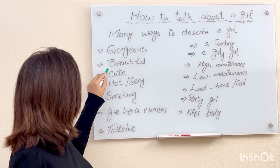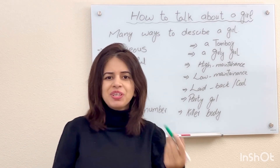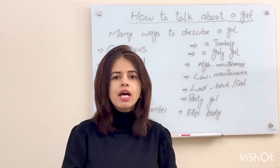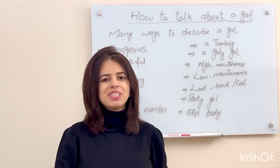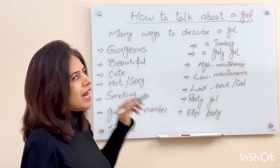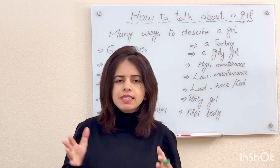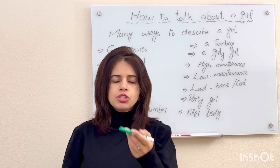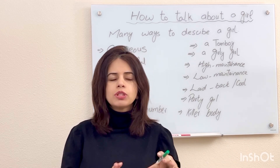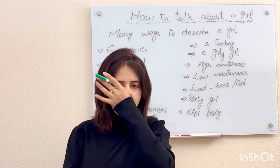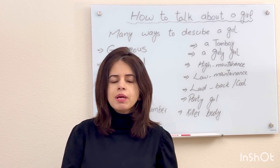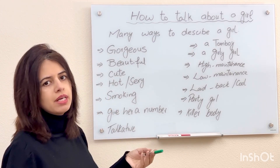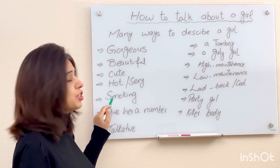You can say she is beautiful. The next word is cute — some girls have a very innocent look and they are very cute, so you say 'she is such a cute girl.' If a girl is a little sexy type, she is hot, then you can use 'hot' and 'sexy.' These terms you cannot use in front of the girl — use them with friends. You can also say she is a smoking girl.